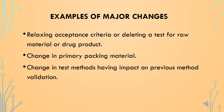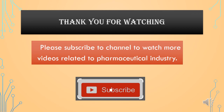Here are a few examples of major changes. Relaxing acceptance criteria or deleting a test for a raw material or drug product shall be categorized under major change controls, as this change may have an impact on the strength of a product. Change in primary packing material shall be categorized under major changes, as this change may have an impact on the identity of a product. Change in test methods having an impact on previous test validations shall also be categorized under major changes. Thank you for watching. Please subscribe to the channel to watch more videos related to the pharmaceutical industry.